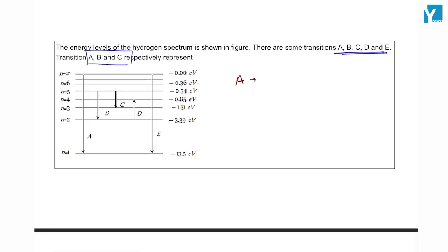If I talk about A, if I talk about infinity to 1, then what will happen? You will do n is equal to 5 to 2, which is the third line of the Balmer series. And next is C.